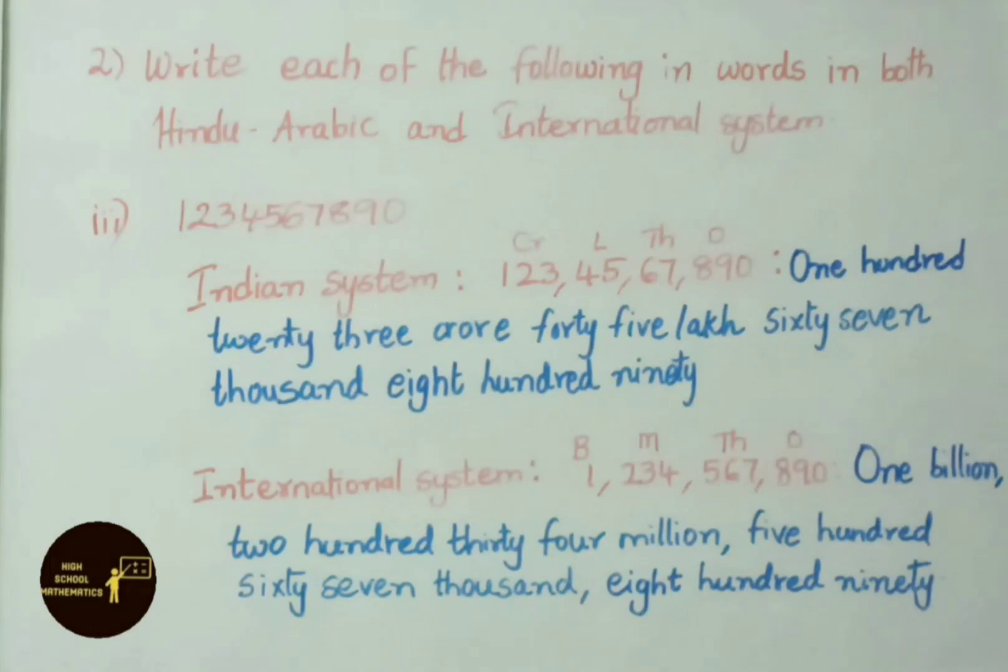See the number in international system now: 1,234,567,890. See the number in word form now: one billion, two hundred thirty four million, five hundred sixty seven thousand, eight hundred ninety.